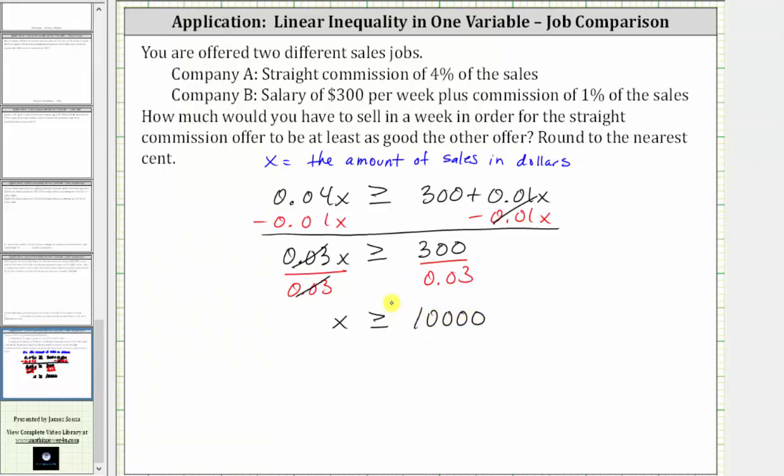And since the solution is x is greater than or equal to 10,000, we know you must sell at least $10,000 in a week in order for the straight commission offer to be at least as good as the other offer.